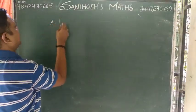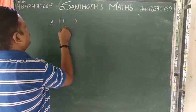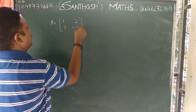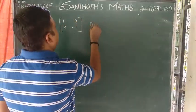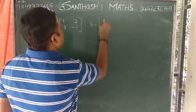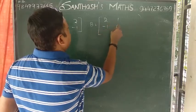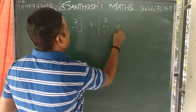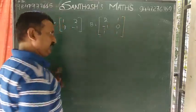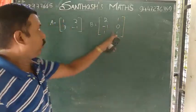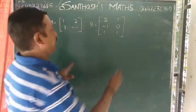Matrix A: 1, 2, 3, minus 1. This is a matrix. Matrix B: 2, 1, minus 1, 0, 1, 1. This is a matrix.